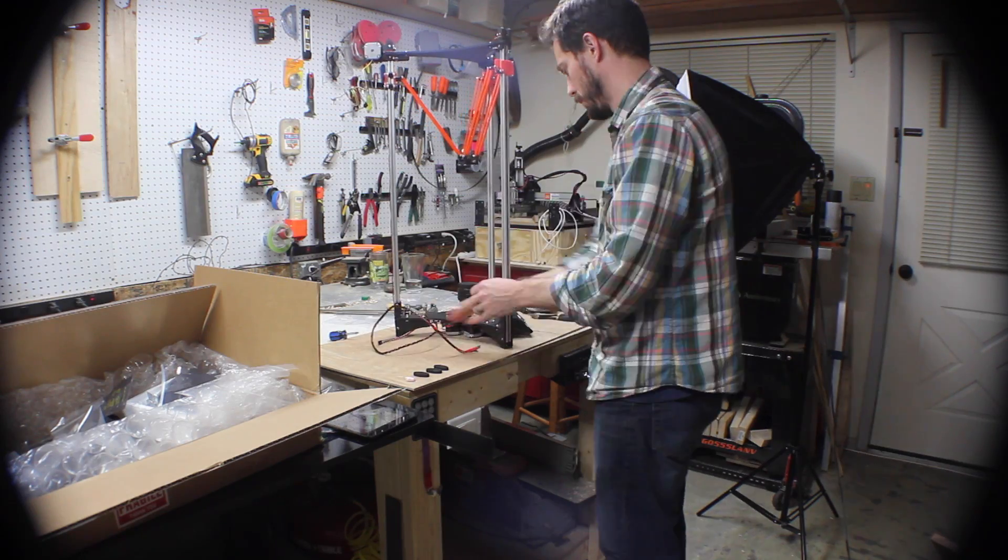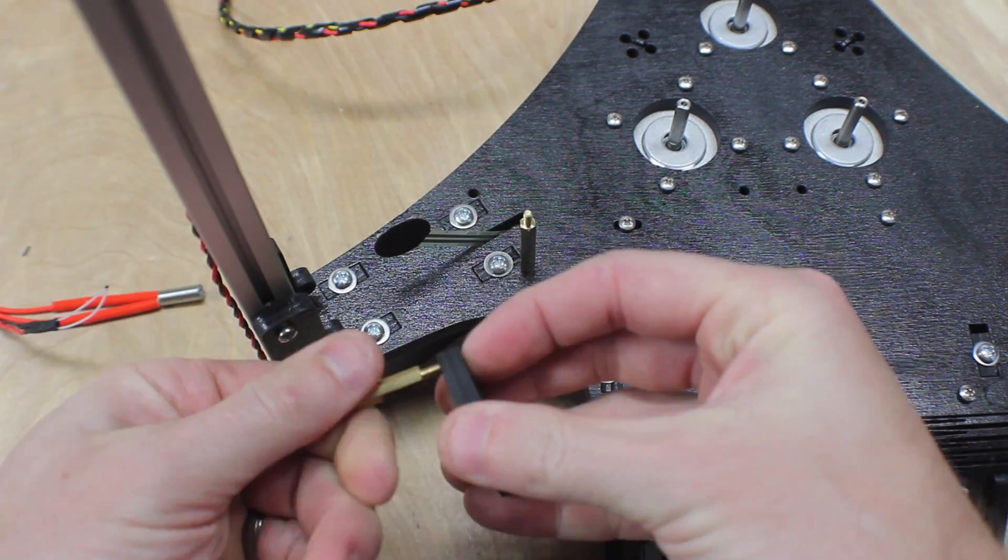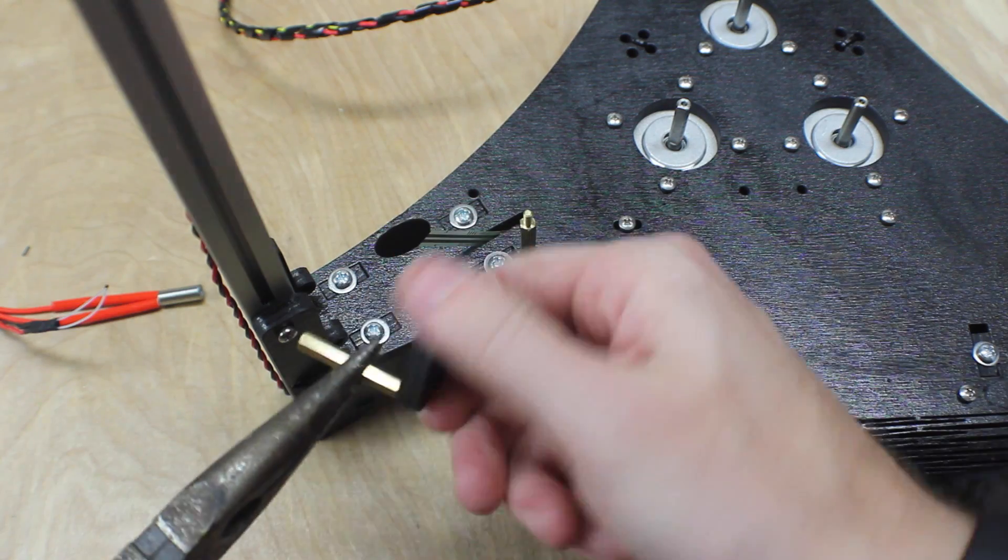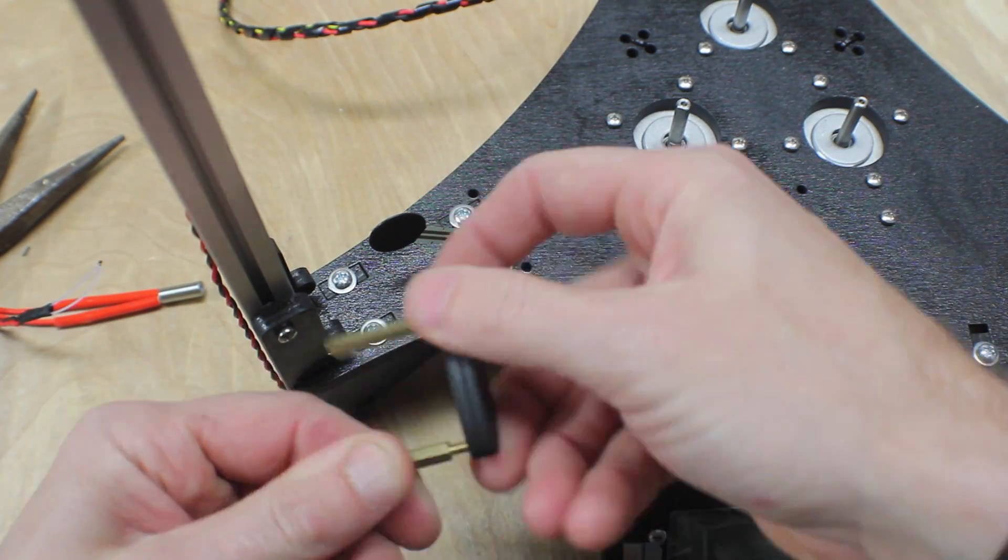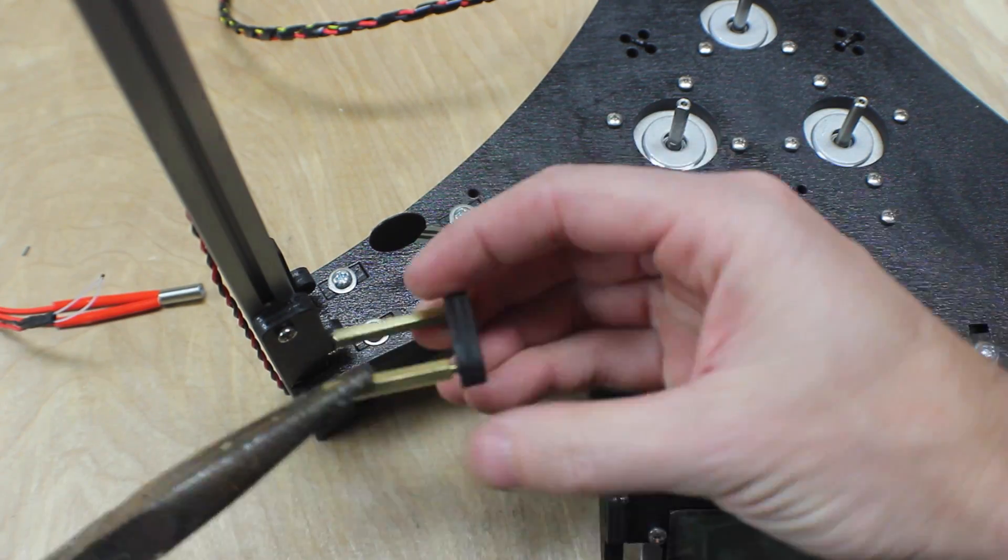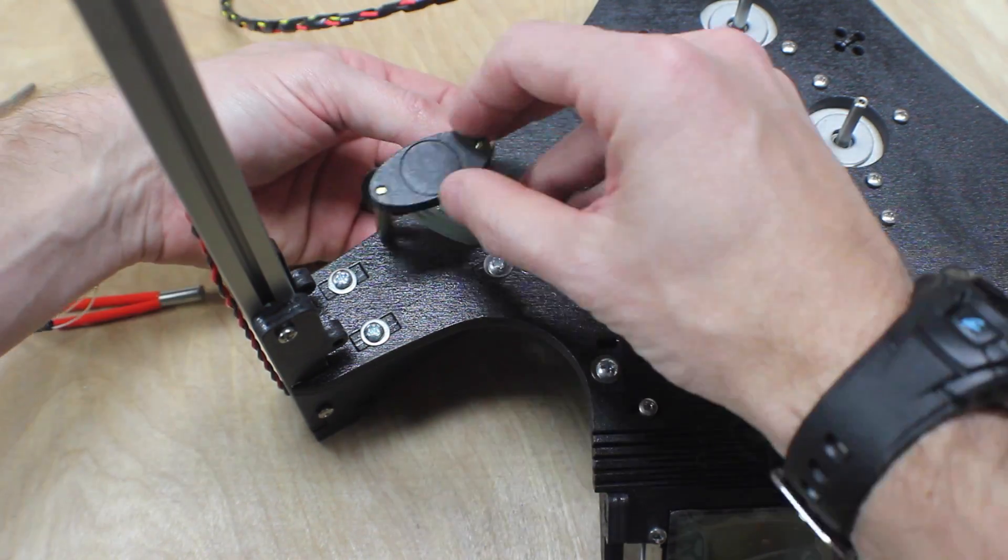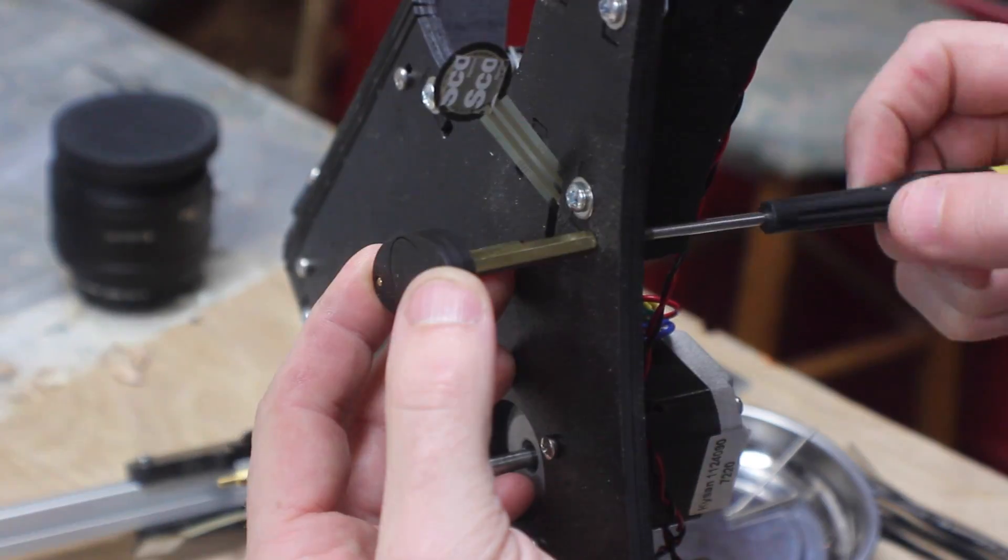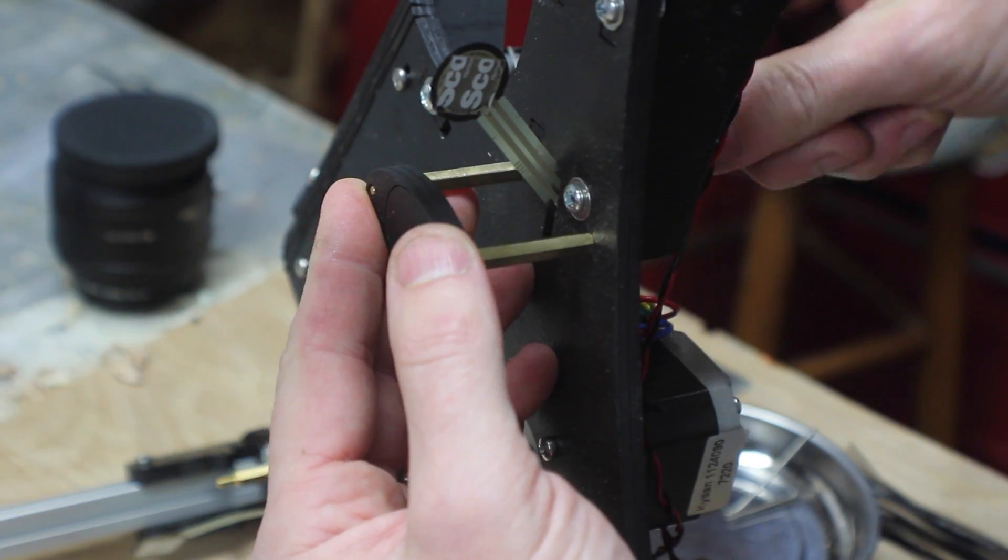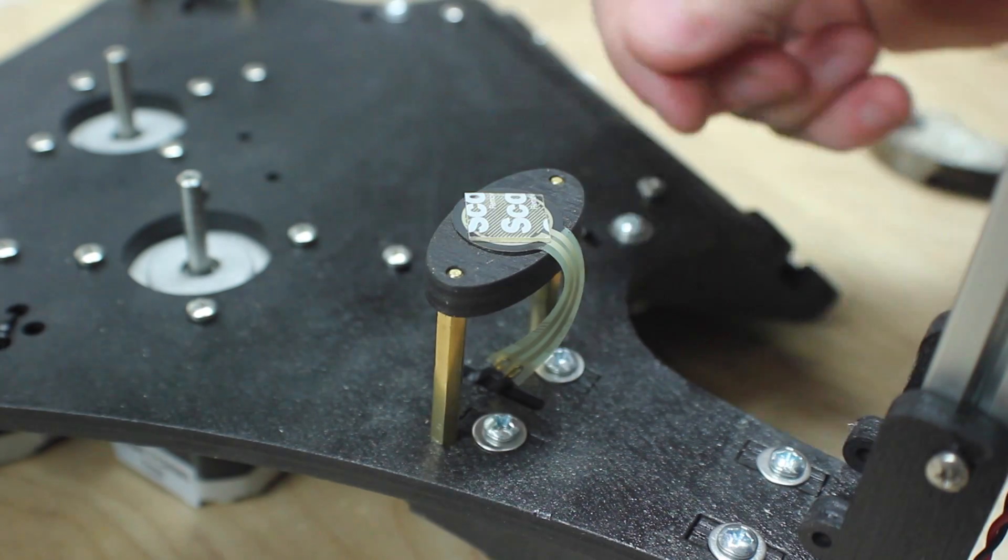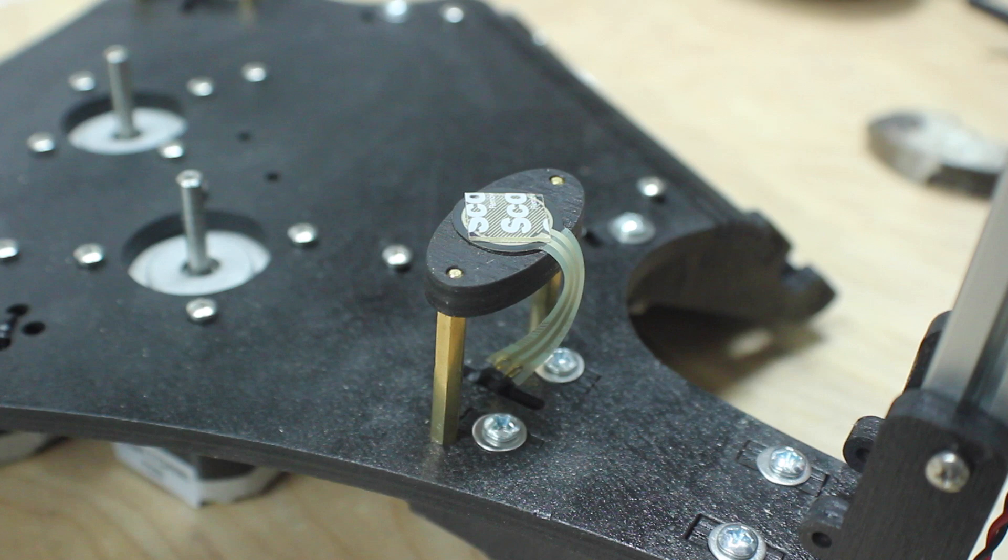I flipped the printer back over and if you were like me and attached the brass standoffs, go ahead and take them off. You're going to have to screw them into these pieces of wood shaped like ovals. Once you've got both of them in, you can put screws up through the bottom of the plate and screw them in. These sensors have an adhesive back, so carefully peel it off and put it right in the center of this pedestal.